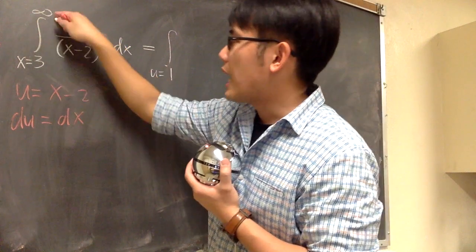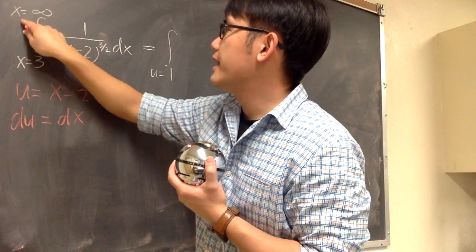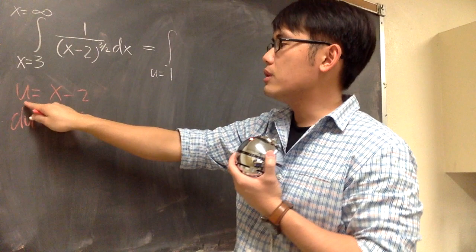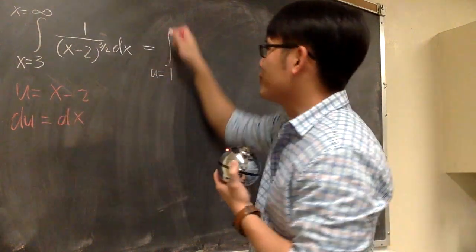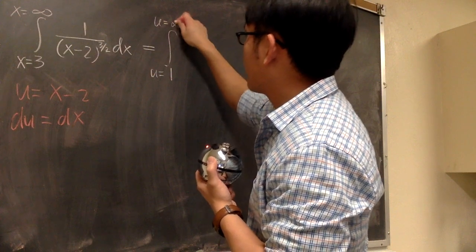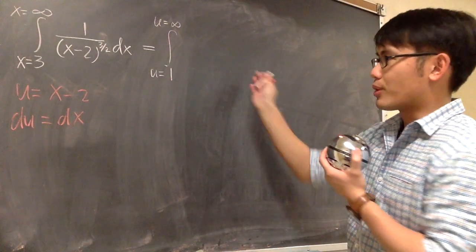And on the top, we know this is x goes to infinity. Well, if x goes to infinity minus 2, u also goes to infinity. So it's still improper, of course.